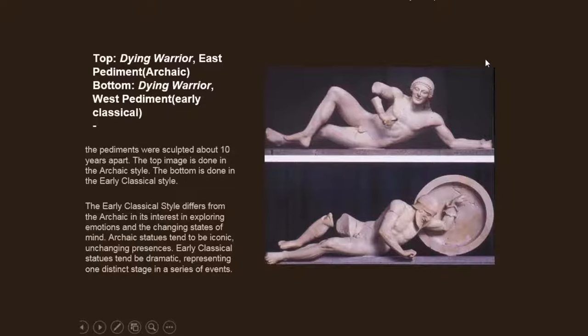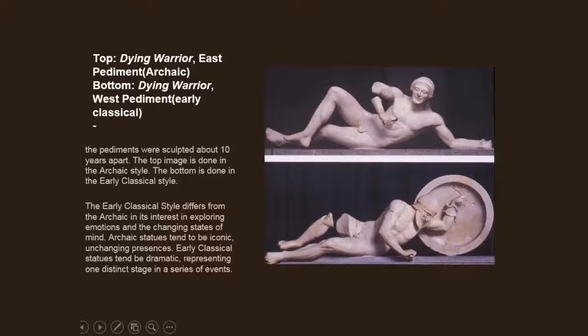If you carry the idea of the New York Kouros or the Anavisos Kouros compared to the Critian Boy through to these two dying warriors, you can see the same parallels apply. The archaic figure has the archaic smile and the same archaic ideals as the Kouros figures. The early classical figure — like the Critian Boy or the charioteer — has specific trappings appropriate to his station and occupation; there is emotion, concentration, and he's part of a narrative. Early classical statues tend to be dramatic, shown as distinct stages in a series of events.